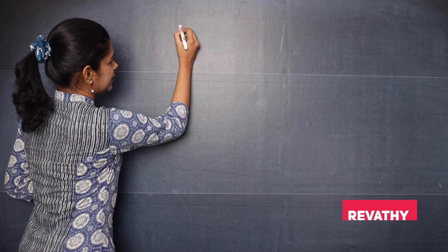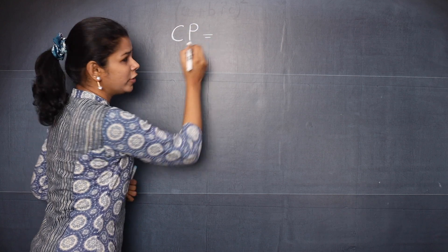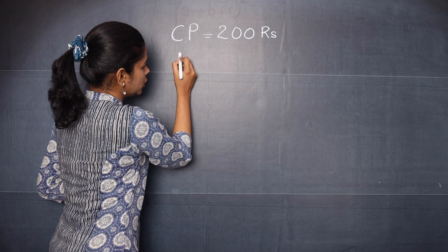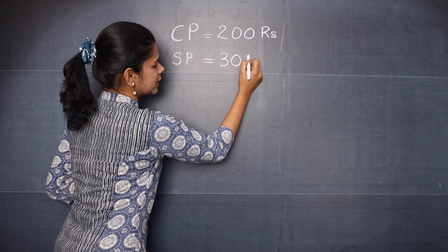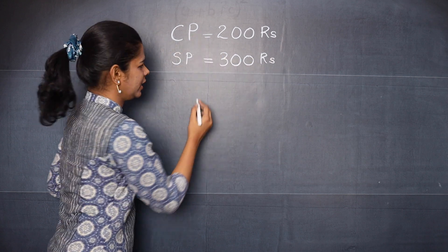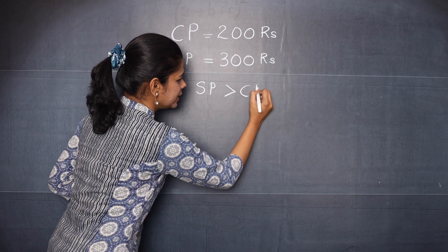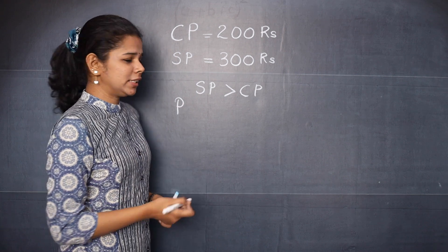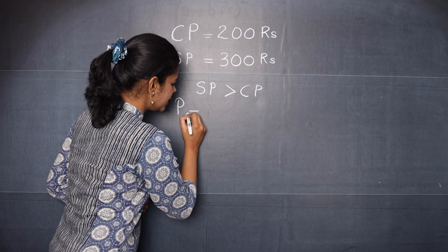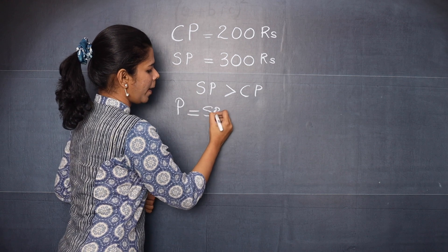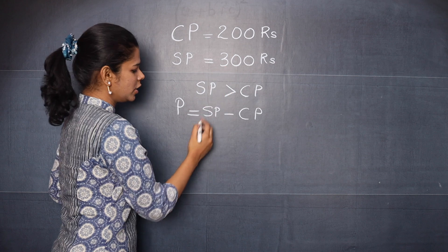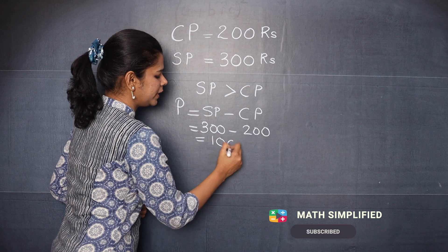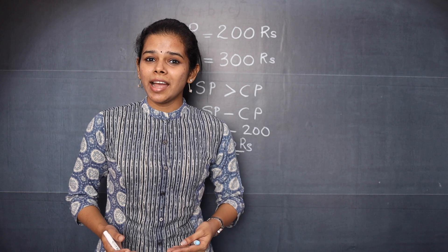The CP, that is the cost price of the shirt, was 200 rupees and you sold it at 300 rupees. As you can see, SP is greater than CP, so in this case it will be a profit. Gain is also another word used instead of profit. So profit is equal to SP minus CP — here that is 300 minus 200, which gives 100 rupees as the profit.